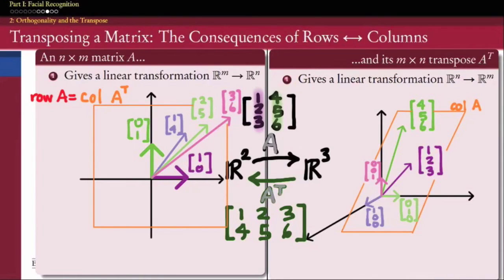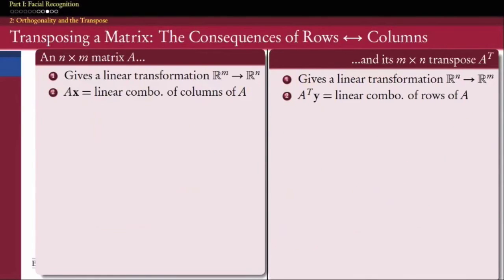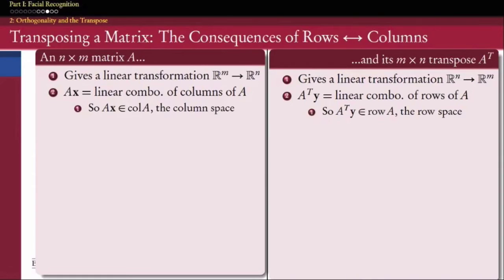A is transforming vectors from its row space onto its column space going from left to right. A transpose is transforming vectors from its row space — which is the column space of A — onto its column space — which is the row space of A — going from right to left. When we multiply a matrix by a vector on the right, we get a linear combination of the columns of that matrix. So every product Ax lives in the column space of A, and every product A^T y lives in the row space of A.